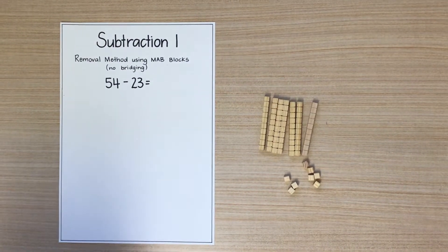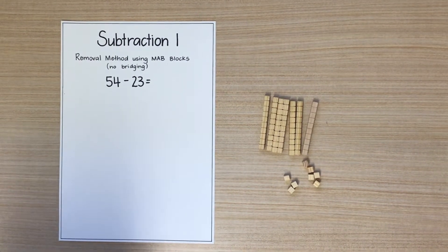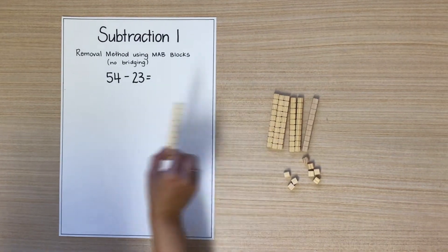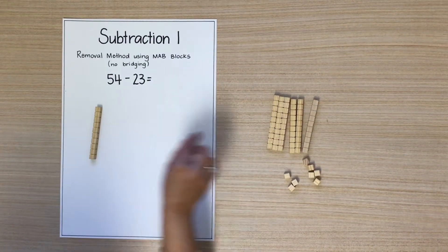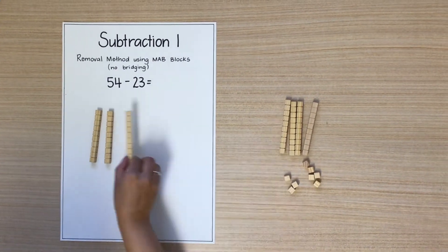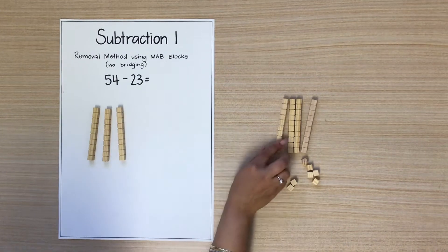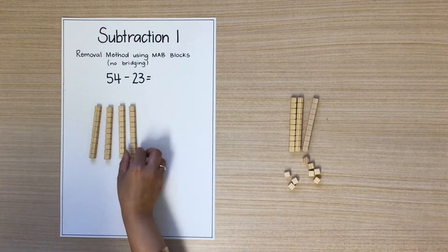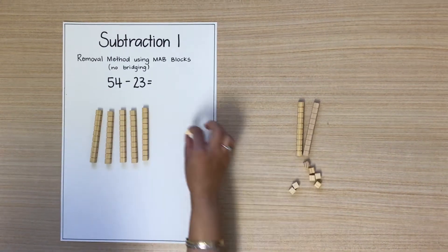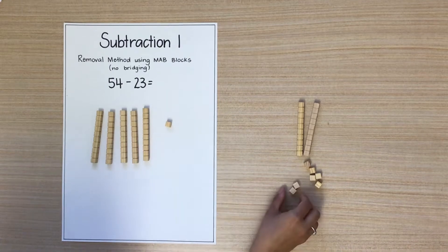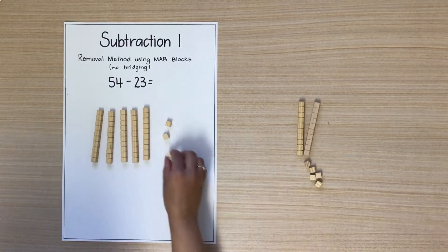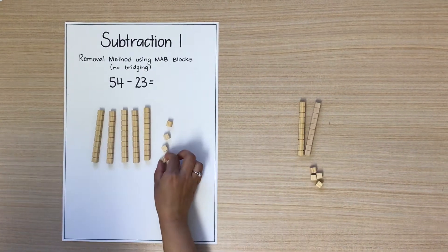First we need to build 54 using MAV blocks. 10, 20, 30, 40, 50, 51, 52, 53, 54.